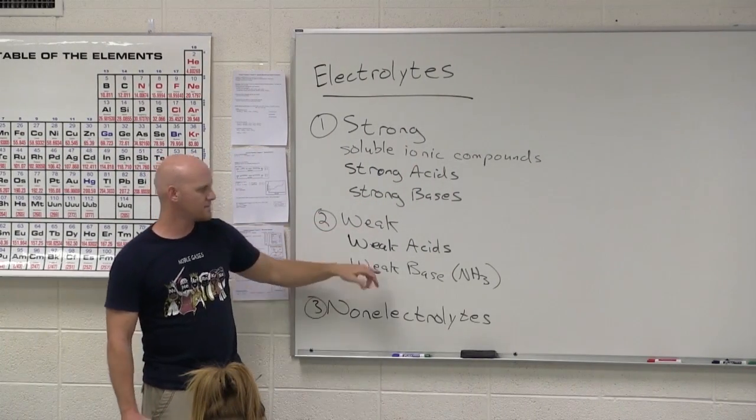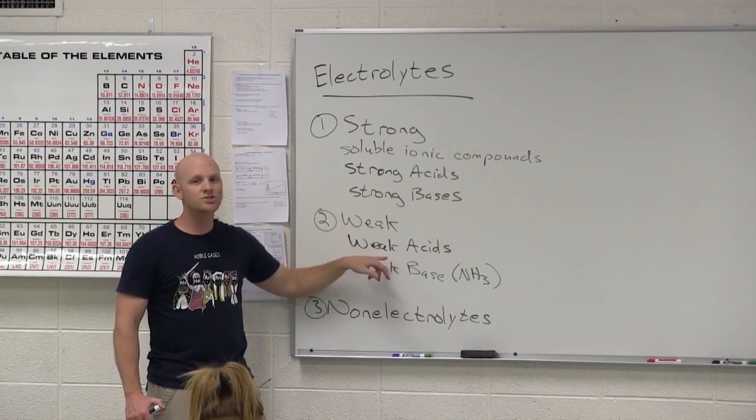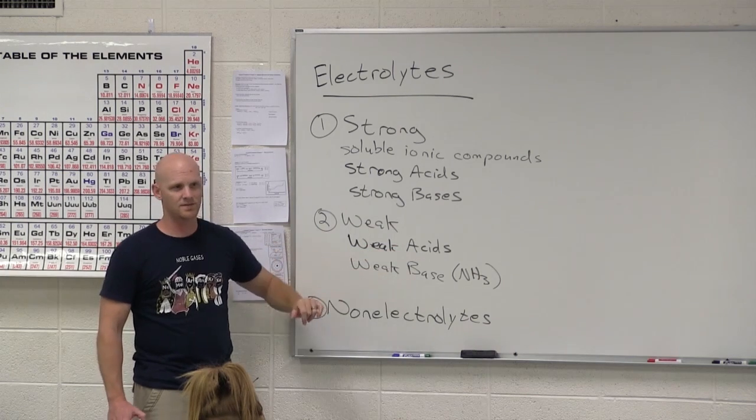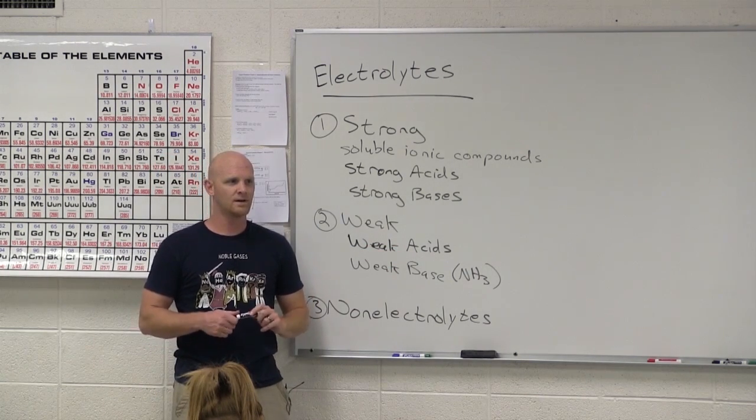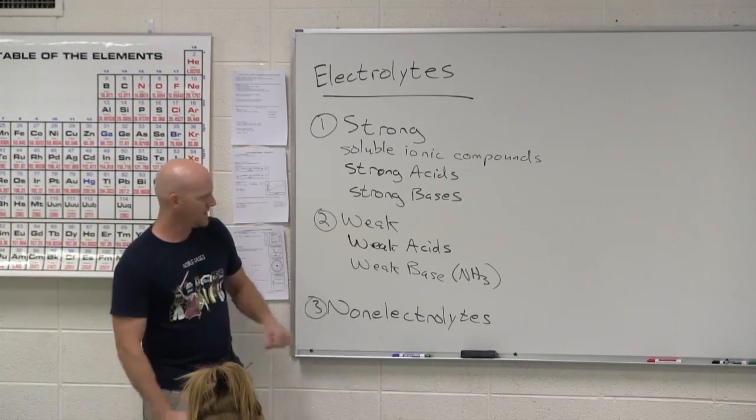So your weak electrolytes, the most important ones are the weak acids and weak bases. Technically, things that are only partially soluble, as far as ionic compounds go, could fall in here as well. But you're much more likely to see weak acids or weak bases. And again, how do I know if an acid is a weak acid? Anything. Any acid that's not strong. So any acid that's not one of the seven. And then your weak bases.